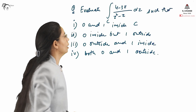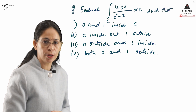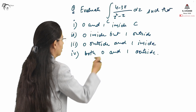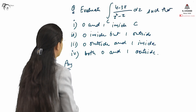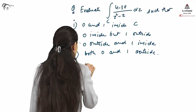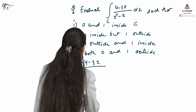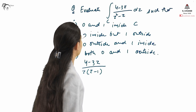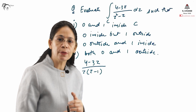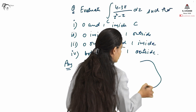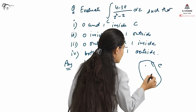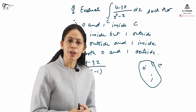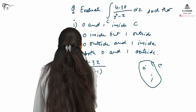Here we will see how to use the Cauchy Residue Theorem. The function (4 − 3z) / (z(z − 1)) has two singularities at z = 0 and z = 1. For Case 1, when both zero and one are inside C — meaning both singularities lie inside the closed curve C — we need to find the residue at both points.